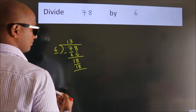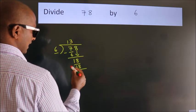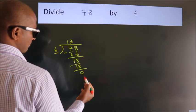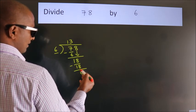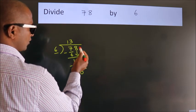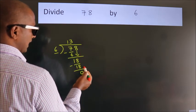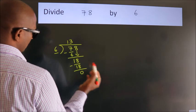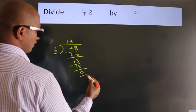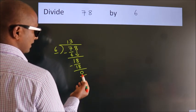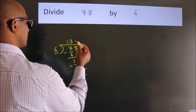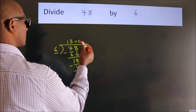Now we subtract. We get 0. After this, no more numbers to bring down, and we got remainder 0. So this is our quotient.